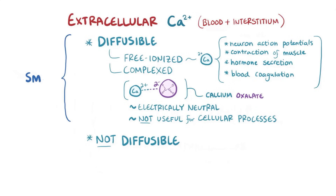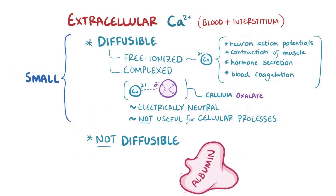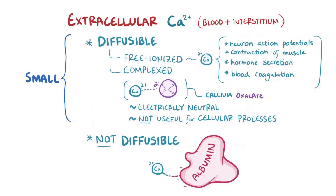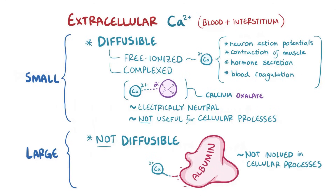Both free ionized and complex calcium are called diffusable because they're small enough to diffuse across cell membranes. Finally, there's non-diffusable calcium, which is bound to negatively charged proteins like albumin, and the resulting protein-calcium complex is too large and charged to cross membranes, leaving this calcium also uninvolved in cellular processes.